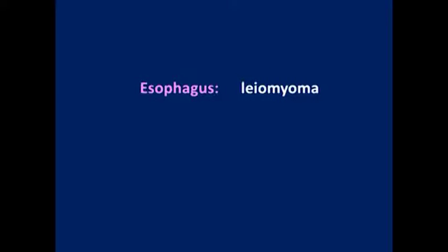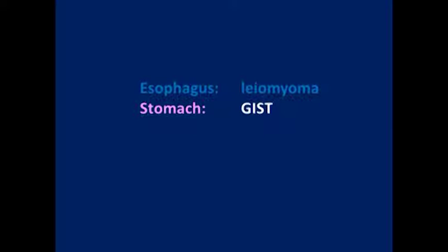Without generalising too much, leiomyomata tend to occur in the esophagus, whereas GISTs are generally found in the stomach. The other common lesion in the stomach is the pancreatic rest.